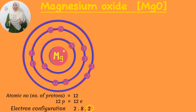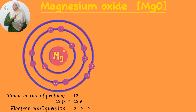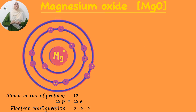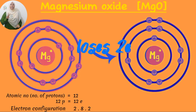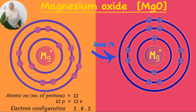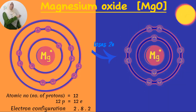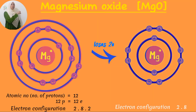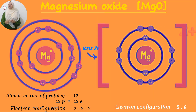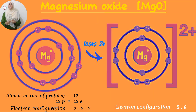So for the magnesium atom to gain stability, it needs to lose its 2 valence electrons. And that is what magnesium does — the atom loses 2 valence electrons to form an electron configuration of 2, 8. So 2, 8 is the electronic configuration of the magnesium ion.